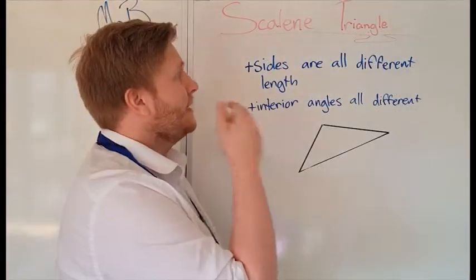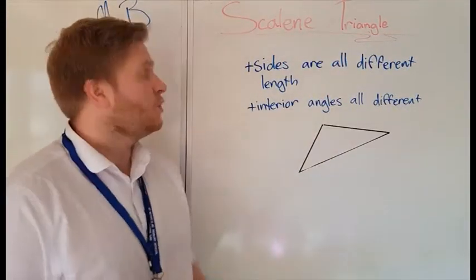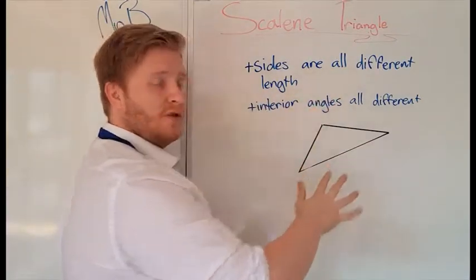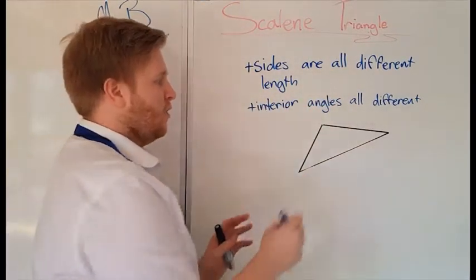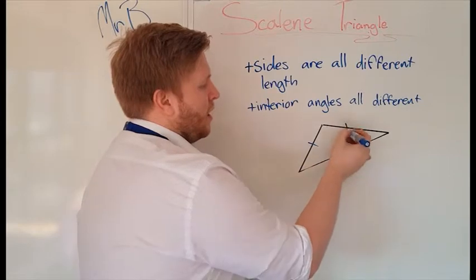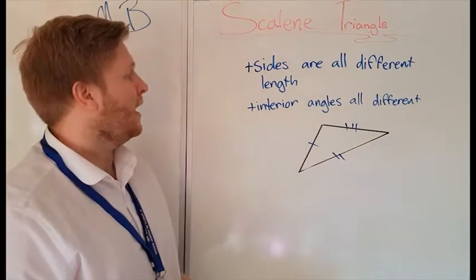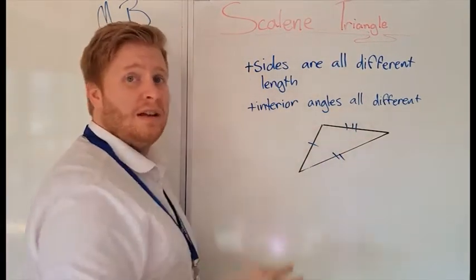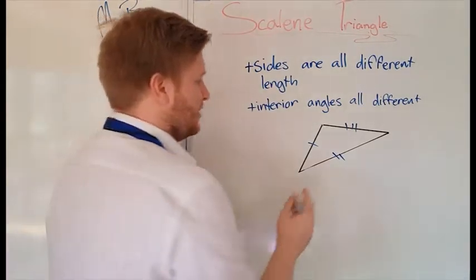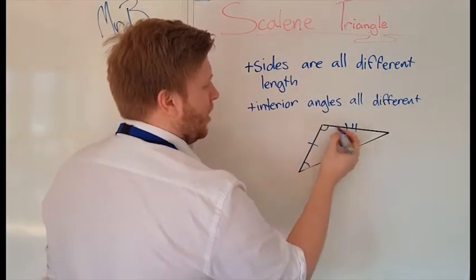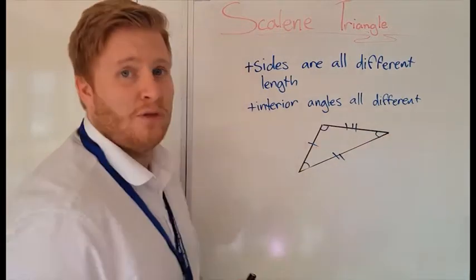Now we're going to look at scalene triangles. Now scalene triangles, all the sides on a scalene triangle are different, so all these sides here are all different lengths. And as well as that, all the angles on the inside are all different sizes as well. So this angle, that angle, and that angle will all be different amounts.